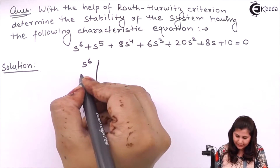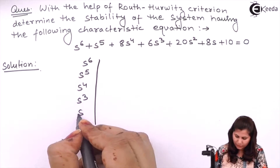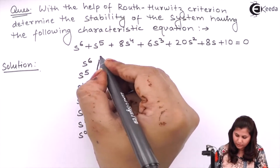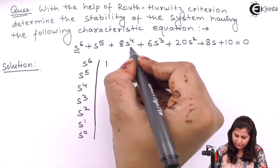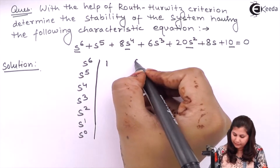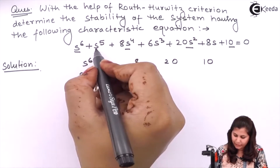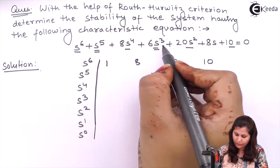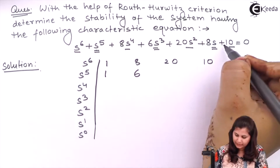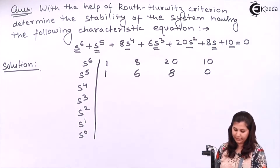First we are having S⁶, then S⁵, S⁴, S³, S², S¹, and S⁰. For S⁶, we write the coefficients of all even powers of S: 1, 8, 20, 10. For S⁵, we write the coefficients of all odd powers of S: 1, 6, 8, and 0 to complete the row.